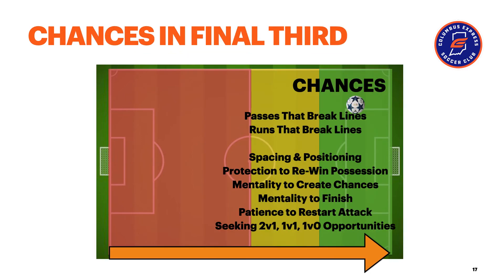In the final area, we're looking at creating chances — passes that break lines beyond the opponent, and runs that break lines made beyond an opponent. Spacing and positioning are really important here, and we must have the protection to re-win possession if we lose it. We want a mentality to create chances, but also a mentality to finish chances. We might have a player in the wide area looking to serve the ball, but we need someone to get on the end of it — players with the mentality to run, do the hard work, score goals, or keep plays alive.